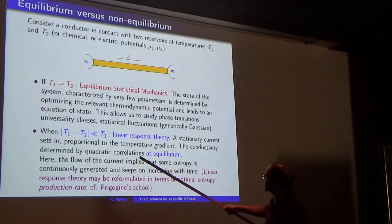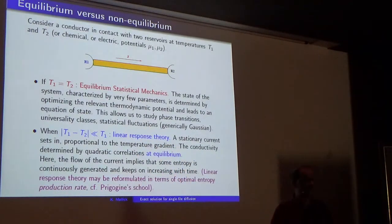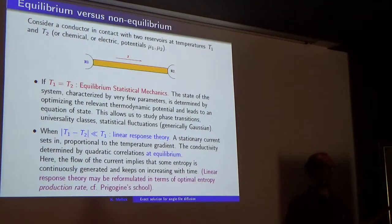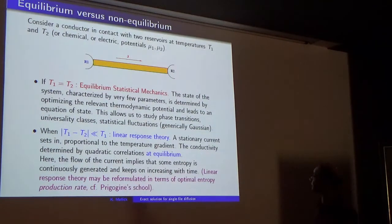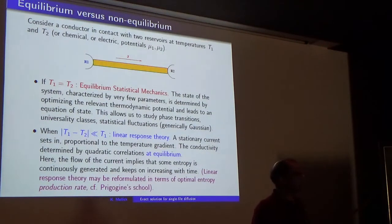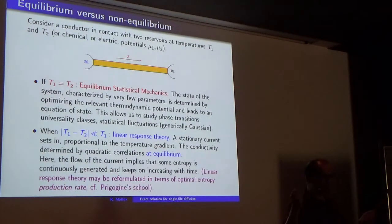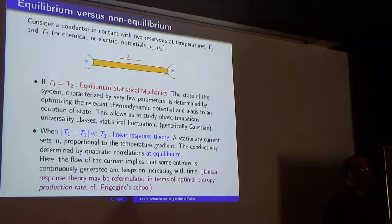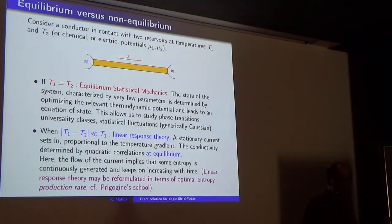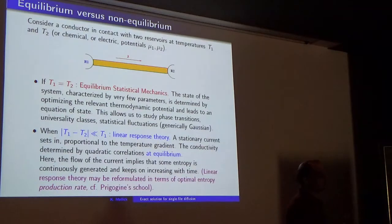But if the temperatures or the densities are slightly different — so the relative difference is small with respect to the absolute value — then you will have a steady current in the long-time limit. But you can use linear response theory, which means first order perturbation around thermodynamic equilibrium to get some results. For example, you can compute the conductivity of this system for small differences of voltages by using the Kubo formula, which is an avatar of the Einstein formula, relating transport coefficients — conductivity, resistivity — with fluctuations at equilibrium.